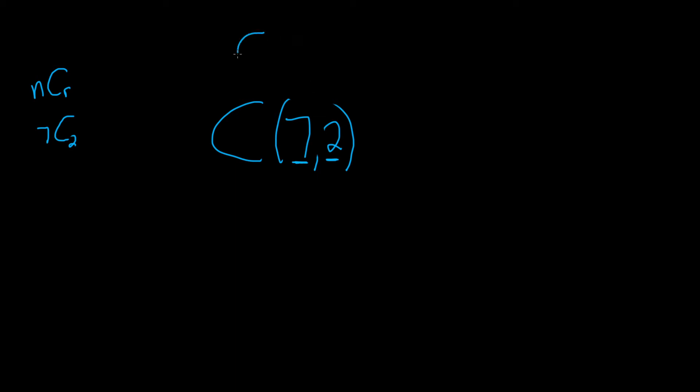The formula for n choose r is n factorial over (n minus r) factorial times r factorial.